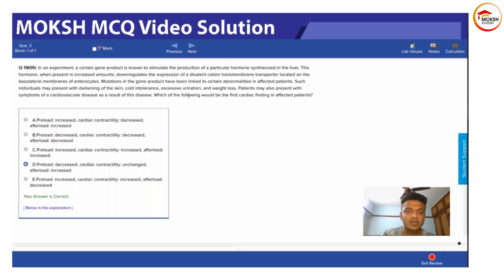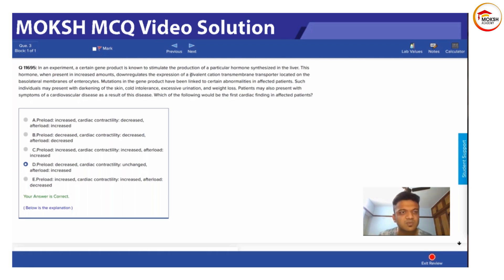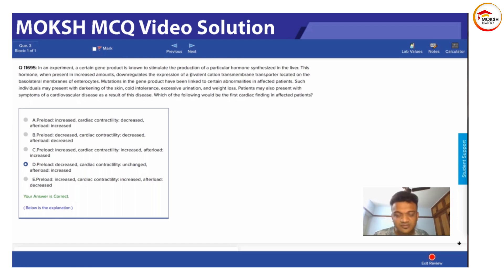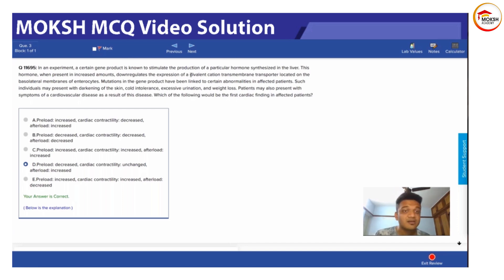These four are the major symptoms: darkening of skin, cold intolerance, weight loss, and excessive urination. Even if Cushing's matched partially, cortisol has nothing to do with divalent cation transfer and transport. SIADH doesn't fit either — divalent cation transport is located in the basolateral membrane of enterocytes, and ADH has nothing to do with that. Moreover, in SIADH there is more ADH, so there will be less urination, not more.